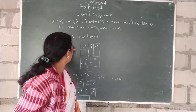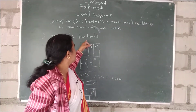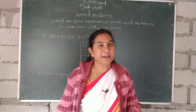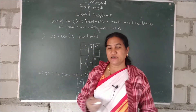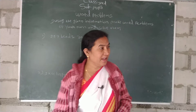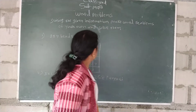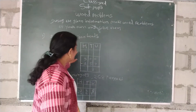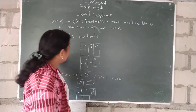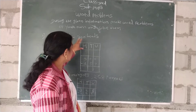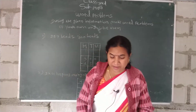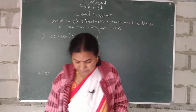257 beds and 300 beds — how much is the answer? What do you have to do? Subtraction. 257 beds and 300 beds — subtraction.